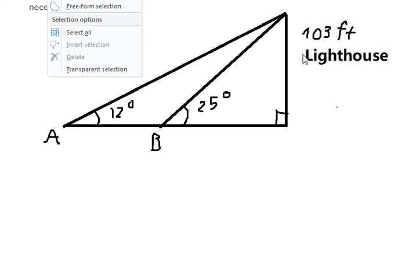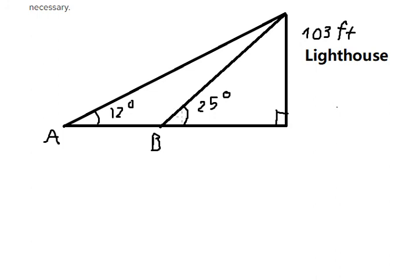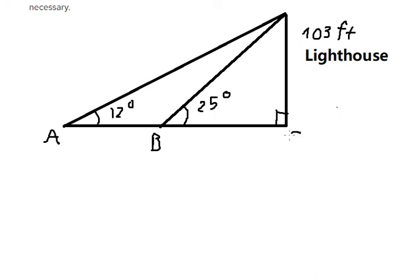We have the height of the lighthouse at 103 feet. We have the angle at point A and the angle at point B. In this situation, I will label the base of the lighthouse as point C. First, we need to find the distance from C to B. To do this, we concentrate on the triangle formed at point B.